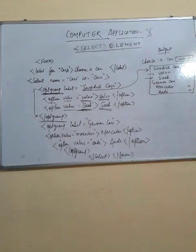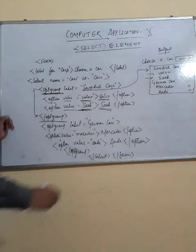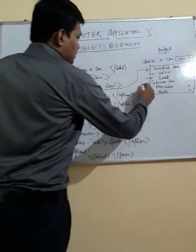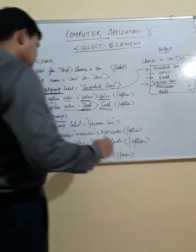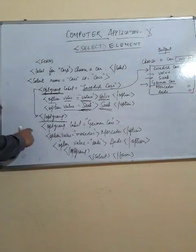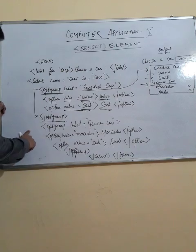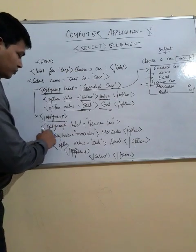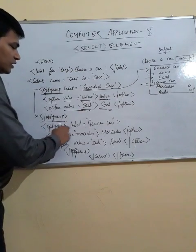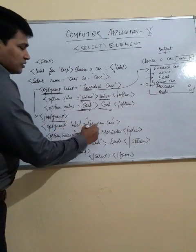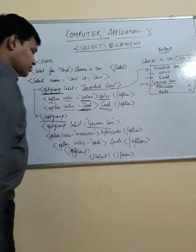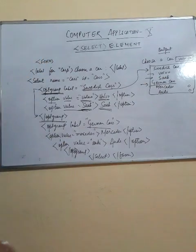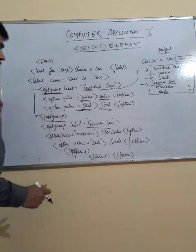In the same way, I am going to define another group named 'German Cars'. I have opened another optgroup tag, and the label name is 'German Cars', as you can see here.